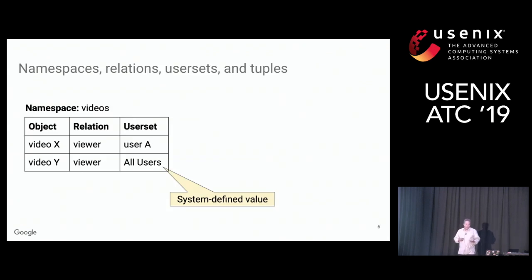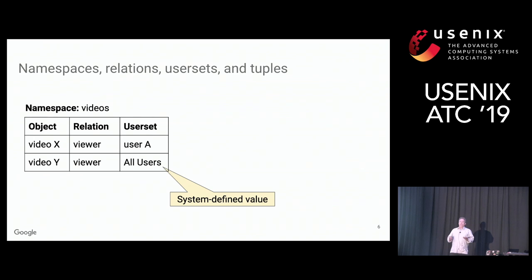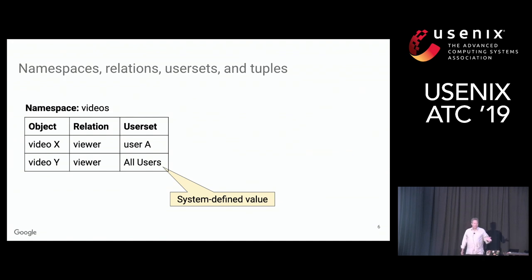Clients create arbitrary namespaces — roughly one per type of object such as videos, photos, or documents. Within those namespaces, clients define arbitrary relations between users and objects, such as owner, editor, commenter, or viewer. Zanzibar stores this information in what we call relation tuples, which is a row in a table. A relation tuple is a three-tuple consisting of an object, a relation, and a user set.